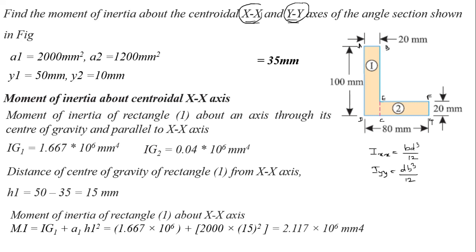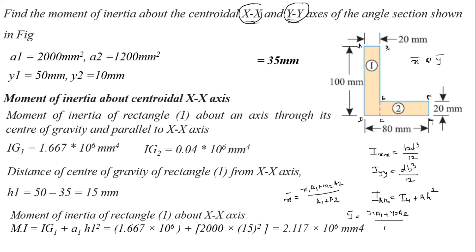The parallel axis theorem applies: IAB = IG + AH². Since the section is not symmetric about either axis, we need to calculate both X-bar and Y-bar. X-bar = (X1·A1 + X2·A2)/(A1 + A2). A1 = 10×200 = 2000 mm², A2 = 60×20 = 1200 mm².